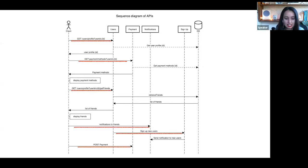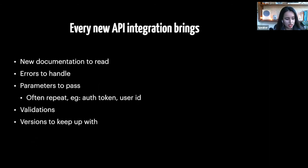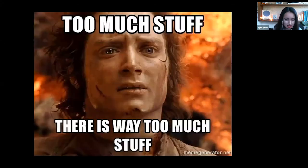If you were counting, that's six different APIs we have to integrate with. Every single API that we have to integrate with brings new documentation to read. There might be different errors that need to be handled, thrown in different formats, because every API might have a different error case. Most of those APIs would be using similar parameters — OAuth tokens, user ID — but some parameters may not be common. We also need to remember validations, and all of these APIs might have different versioning. That's just too much stuff to care about.